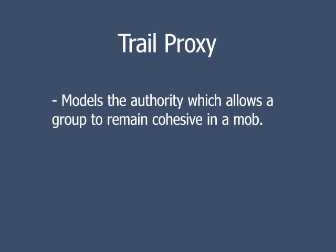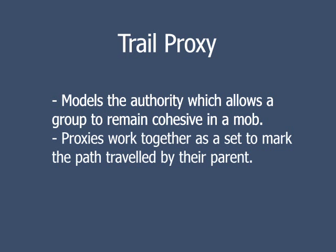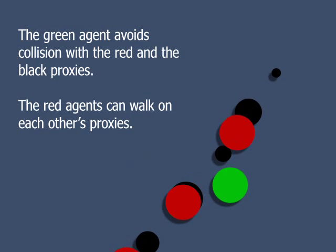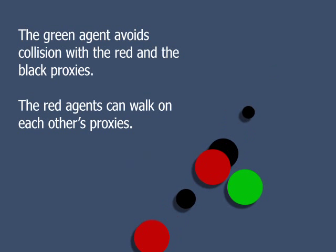The trail proxy allows us to model the authority which allows a group to remain cohesive in a mob. The proxies work together in a set to mark the trail traveled by their parent. Through this mechanism, line integrity is maintained. Here we see a line of composite agents with trail proxies. They are able to walk on each other's trail. The green agent is not and must wait for the trails to disappear to cross.